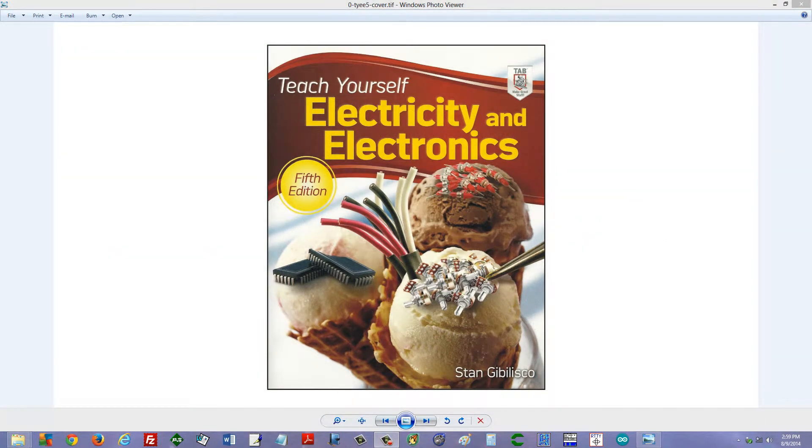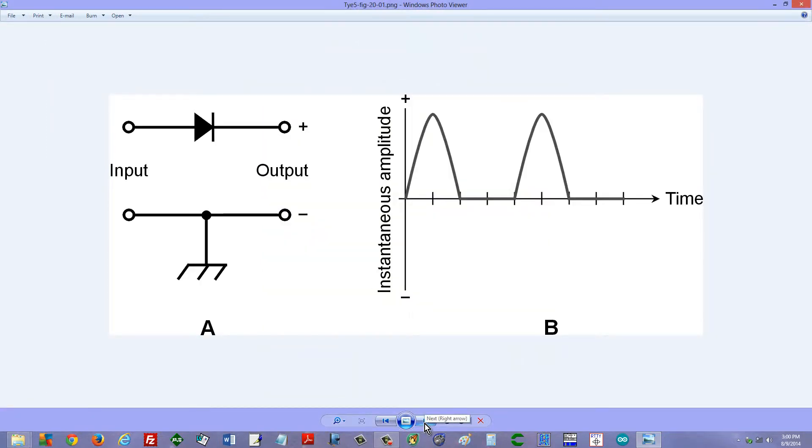Stan Gibalisco here with something from Teach Yourself Electricity and Electronics, 5th edition. I will include a link to the Amazon page for this book in the description. But what this video is actually about is a half-wave rectifier circuit, the simplest type of method to get pulsating direct current from alternating current.